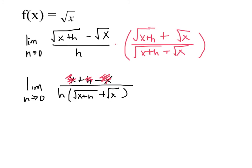So h divided by h is 1, and that's gone. We just have 1 on top. When we get the cancellation, we plug in 0. So we have 1 on top, and on the bottom, we have square root of x plus square root of x, which is 2 square roots of x. And that is our derivative.